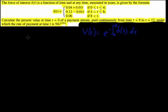This is a time-consuming question, so let's do it as quickly as we can. The force of interest δ(t) is a function of time at any time t measured in years, given by a formula. Calculate the present value at time t equals 0 of a payment stream paid continuously from time t equals 9 to t equals 12, under which the rate of payment at time t is given.